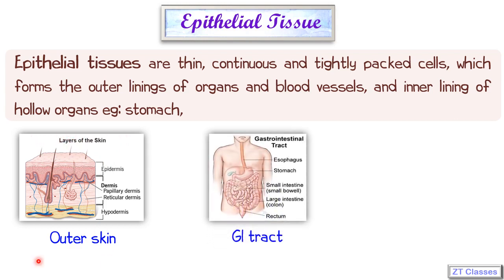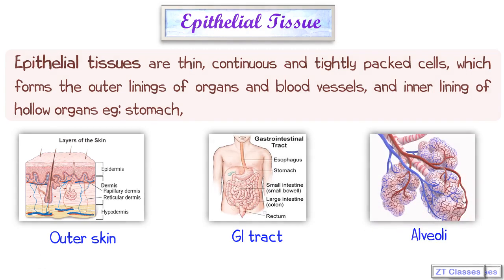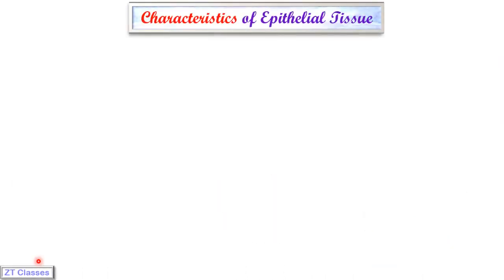Another example is in the GI tract — your gastrointestinal tract includes the esophagus, stomach, and small intestine. The full covering of the GI tract is epithelial tissue. Now let's discuss the characteristics, then the functions, and then the different types of epithelial tissues.